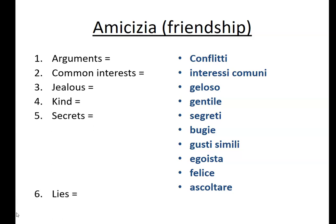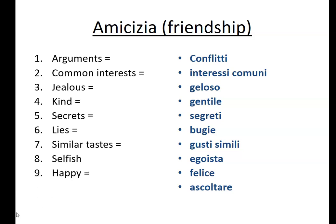Segreti - secrets. Bugie - lies, or fibs, I think is a common translation. Gusti simili - similar tastes. The word gusti means tastes in the literal sense as well, so if you went to an ice cream shop they would ask you che gusto - what flavour, so what taste. Egoista - selfish, think of the word ego: if you've got a big ego you think quite a lot of yourself, you're probably quite selfish. Felice is happy. And ascoltare - we've used since about year eight, so ascoltare la musica, for example, to listen to music. Give yourself a mark out of ten.